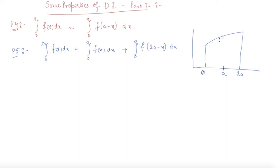To find the area from 0 to 2a of f(x), we split it as the integral from 0 to a of f(x) plus the integral from a to 2a. Instead of writing a to 2a, we rewrite it as the integral from 0 to a of f(2a minus x). If you take the mirror image of this graph and use P2, you get the proof of this property.